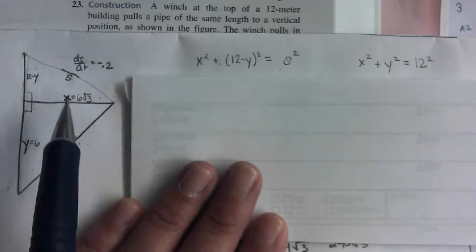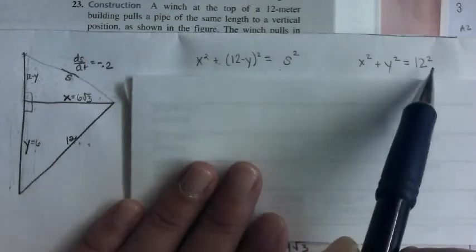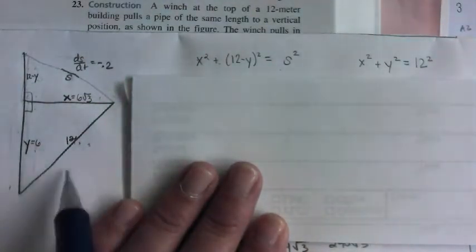On this triangle, I did X squared plus Y squared equals 12 squared. And I actually did plug in my 12 there because that is not changing. It has a rate of change of zero.